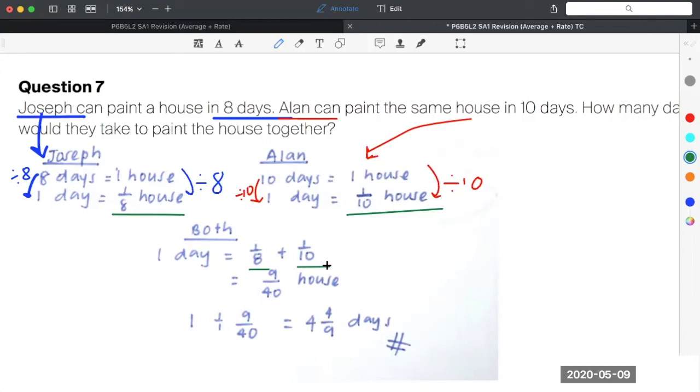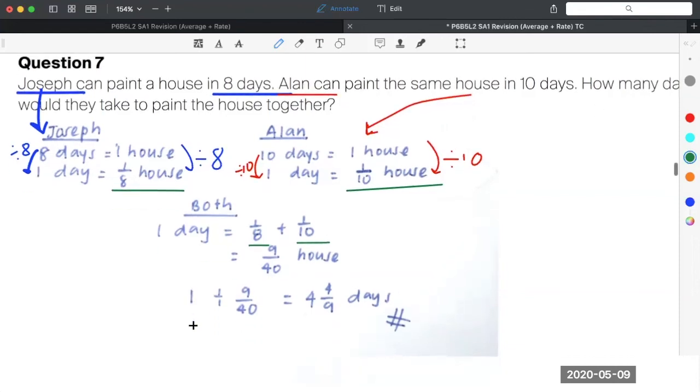Now, how long would they take to paint the house together? One house divided by nine fortieths. Think about it. In a day, nine out of forty of a house is painted. How many days to paint the house? You get one house divided by nine fortieths. That will be the number of days.